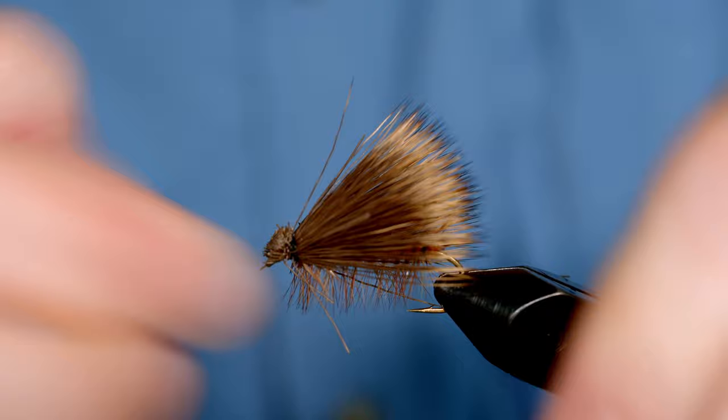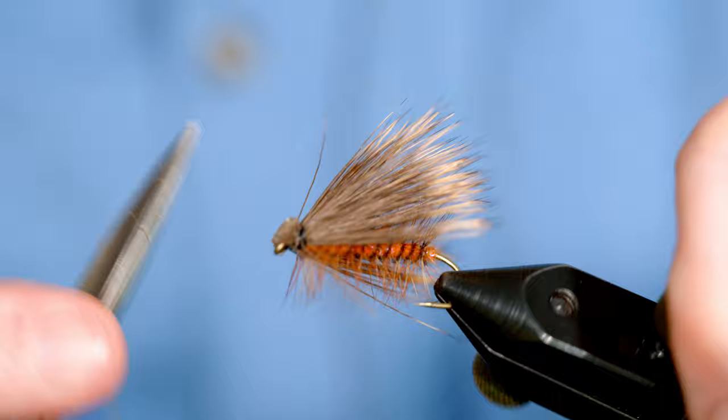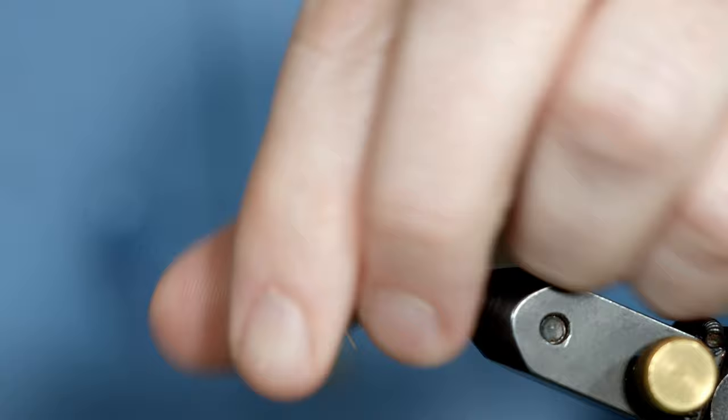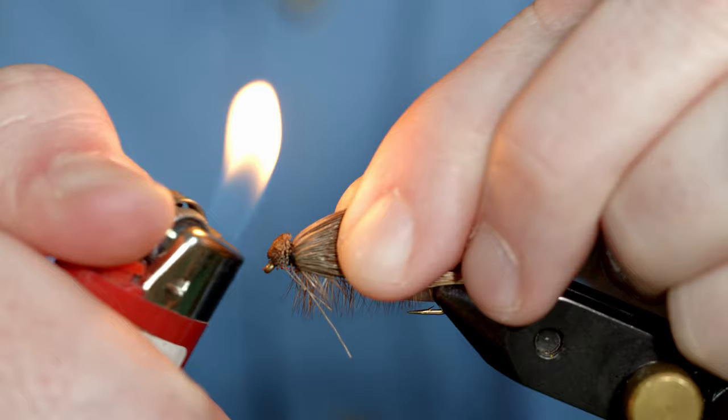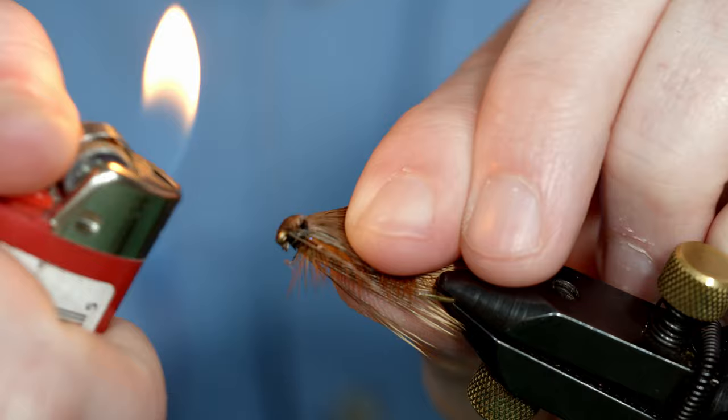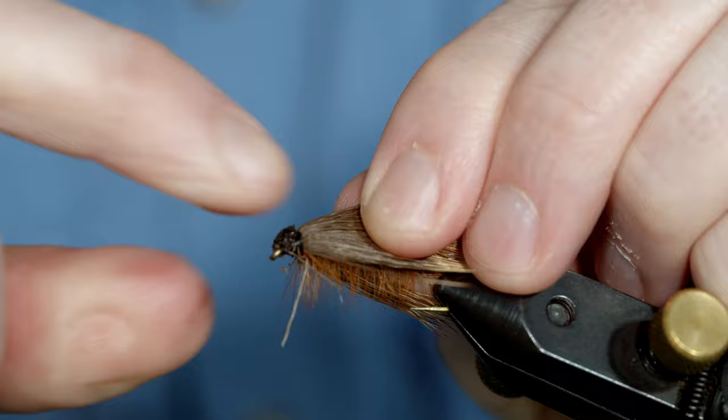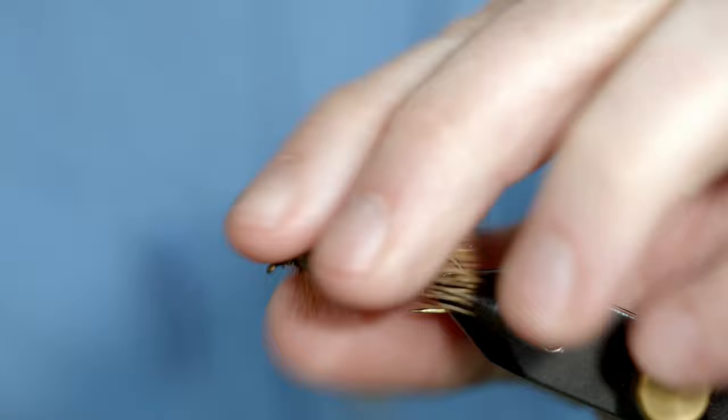Now if there's any errant butt ends, you can just pluck them off. It could be a completed fly, but if you want to refine the head just a little bit more, and if you're brave, you can take a lighter and just run it through the head a little bit, and singe that elk hair and it will give it a cleaner head.